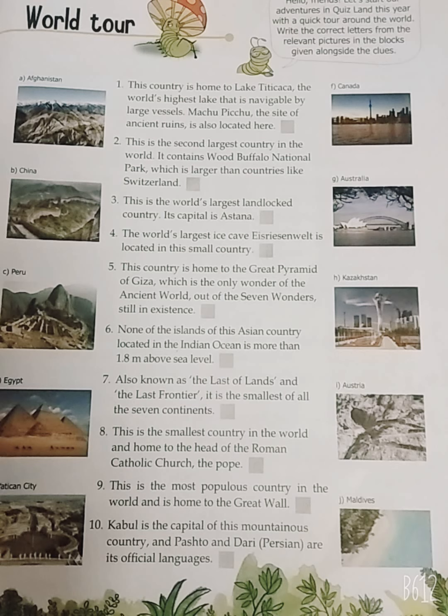Fourth: the world's largest ice cave, Eisriesenwelt, is located in this small country. Do you know where it is? Yes, it is in Austria. Your answer is I — Austria.